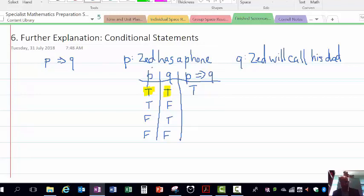The next one is Zed had a phone and Zed did not call his dad. Well, that's like a lie. There's something clearly wrong with that. It's not how it should have been.